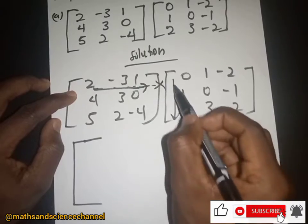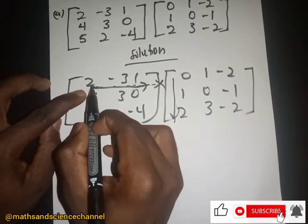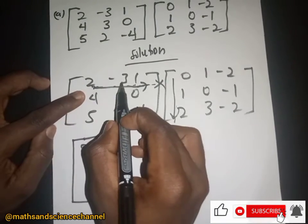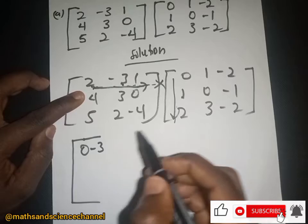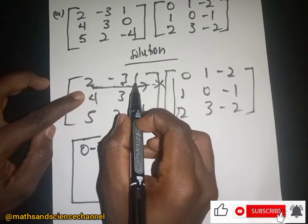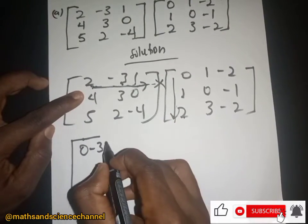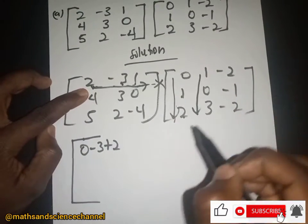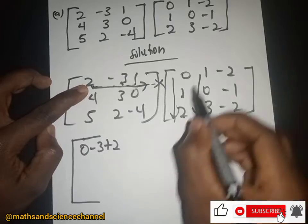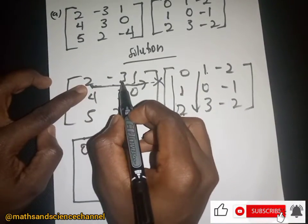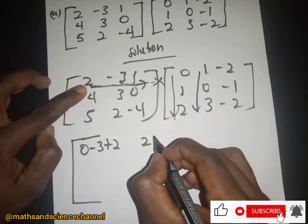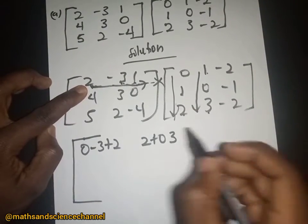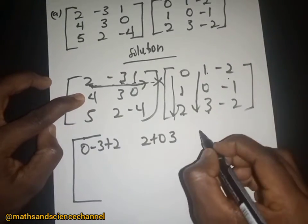So we have 3 multiplied by 0, which gives 0; negative 3 multiplied by 1 gives negative 3; and 1 multiplied by 2 gives 2. Then for the next entry: 2 multiplied by 1 is 2; negative 3 multiplied by 0 is 0; and 1 multiplied by 3 is 3.